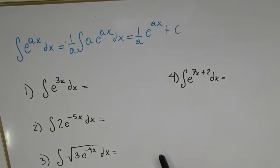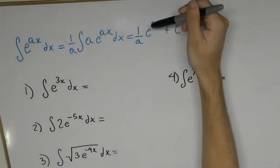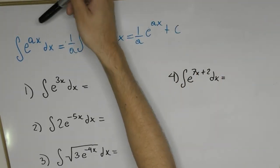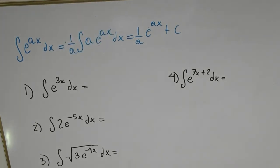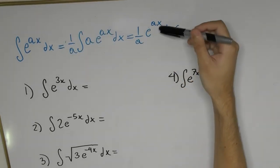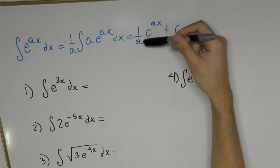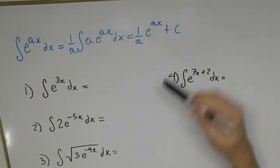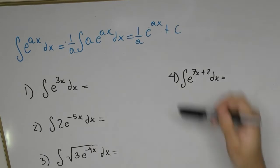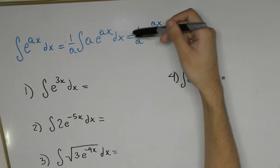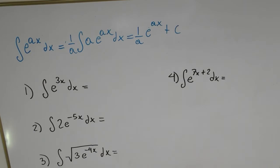One important thing to emphasize: this formula only works for powers of x to the power of 1. The reason is that a is not really the derivative of the power — it's simply the constant attached to it. The argument is based on the fact that if we differentiate this function, the only thing that changes is we multiply the function by that constant.